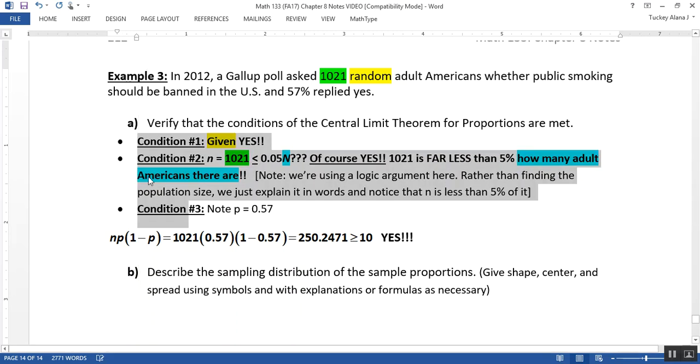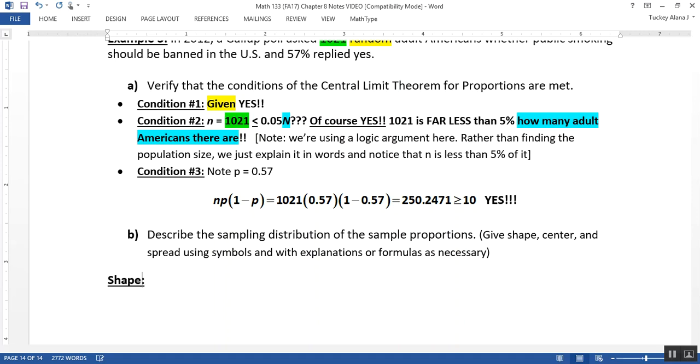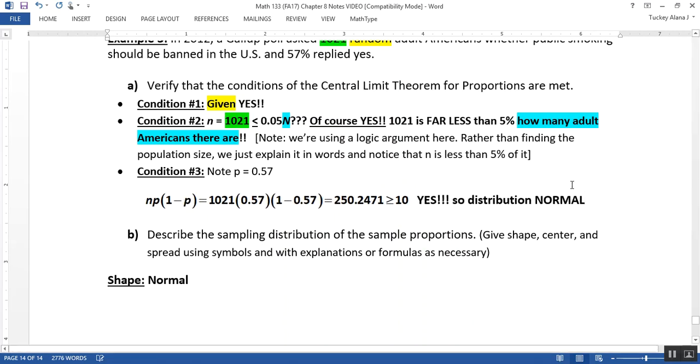So now let's look past that to describing the sampling distribution. The sampling distribution, when they ask it to describe, what they want is shape, center, and spread. So we will give it shape, center, and spread. Now the shape is going to be normal because all three conditions are met. So that's rather easily explained. I'm just going to say normal. We said it was normal right above. Actually we didn't say it. We should have written it there. Condition three is met, yes, so distribution normal.